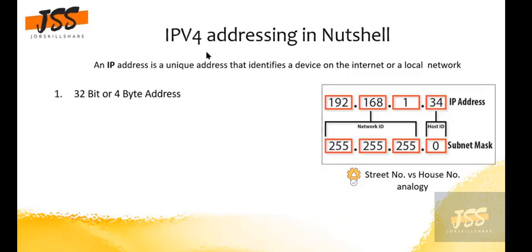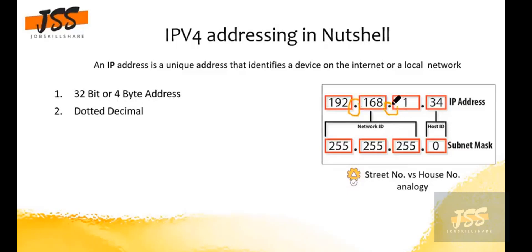Let's discuss a little bit more about IPv4 addressing. It is a 32-bit, four-byte address. It is called dotted decimal because we use dots in between. As opposed to IPv4, we have IPv6, which uses colons for separation.